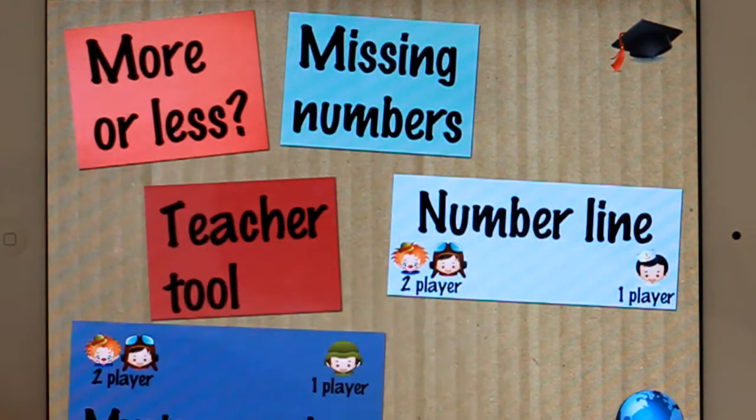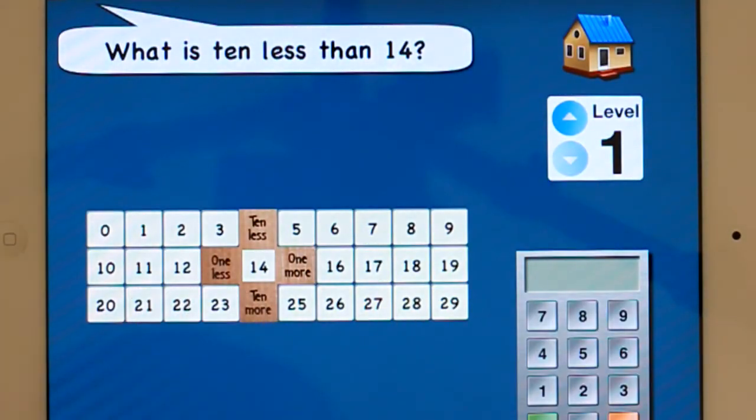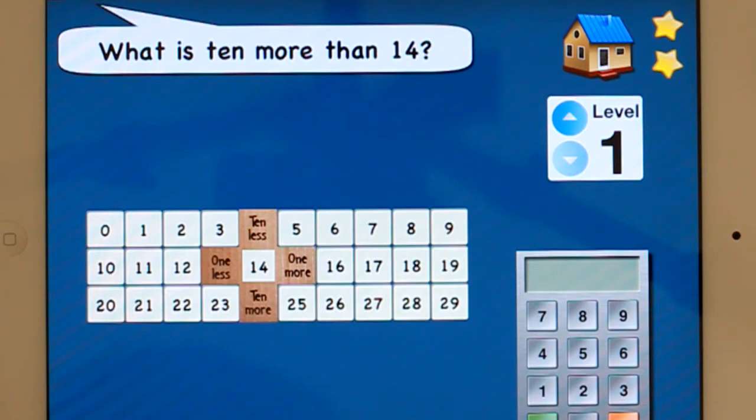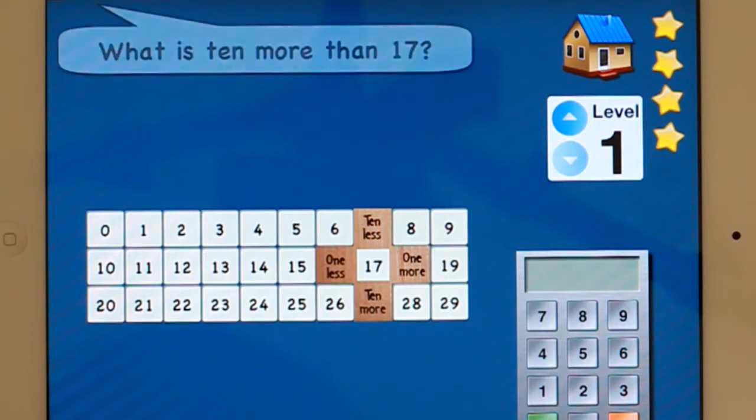So let's have a look at more or less. Alright, so we're in level one, so we go up to, we've gone zero to 29. So we need to read what is 10 less than 14. So we can either use, we can have a look at the chart or we could sneak a peek. So we go four. Of course when you get to 10 it asks, do you want to go back home or do you want to play again? What is one less than 14? So it does stay on that number for a little while. What is one less than 14? What is 10 more than 14? What is one more than 14?